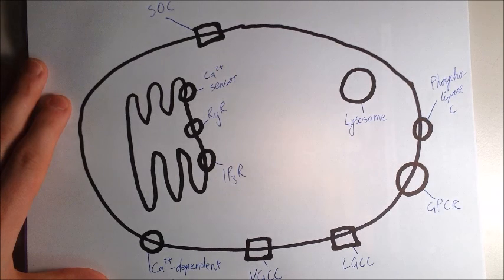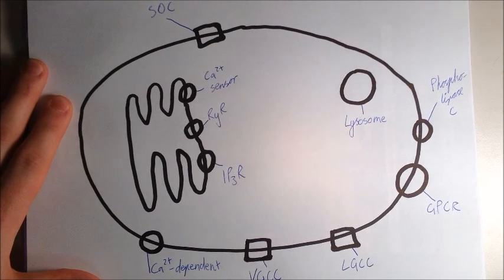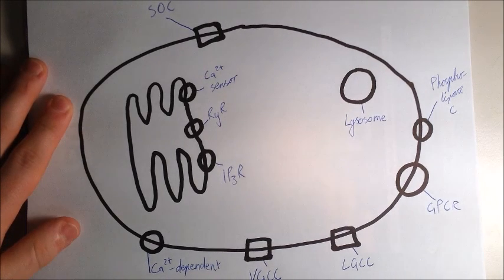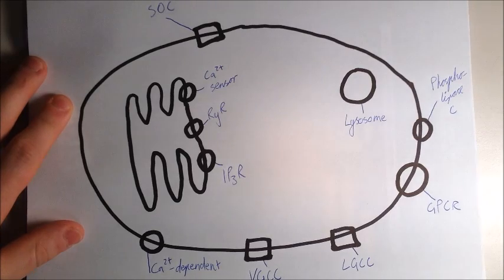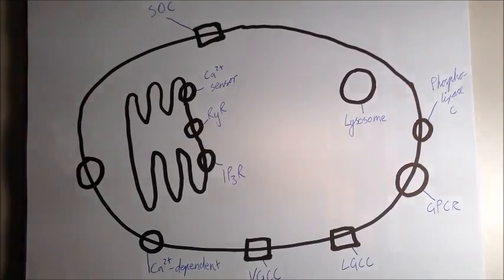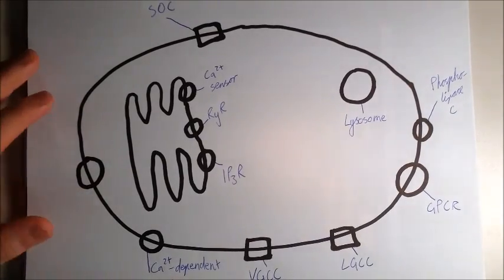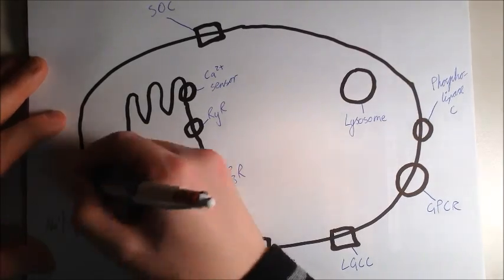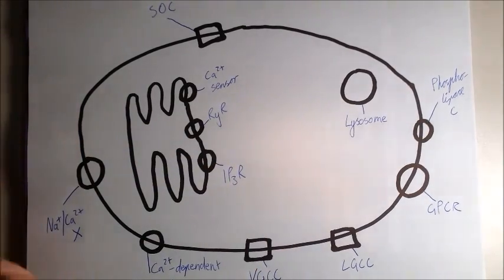Now, phospholipase C is an important enzyme because it is able to take phospholipids from the plasma membrane, mostly phospholipids called PIP2, and basically it can cut it in half. And this is important because by doing this cutting stage, it creates two secondary messengers, inositol triphosphate and diacylglycerol.